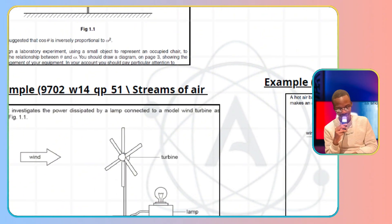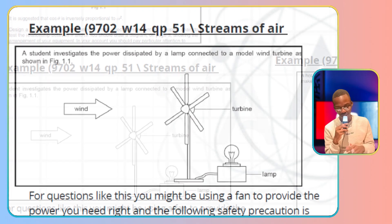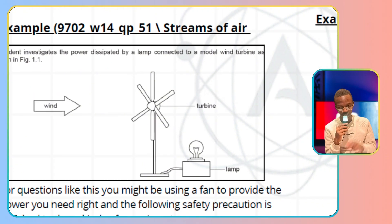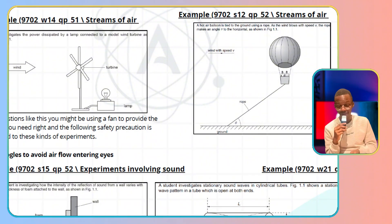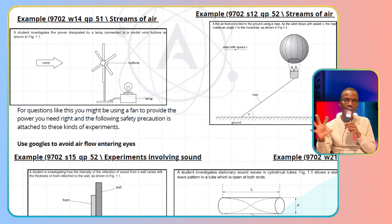Another example: streams of air. I have two examples—Winter 2014 question paper 5-1 and May/June 2012 question paper 5-2. Whenever you have a fan blowing air into an experiment to keep something afloat or rotate something, for questions where you're using a fan, you need to write the following precaution